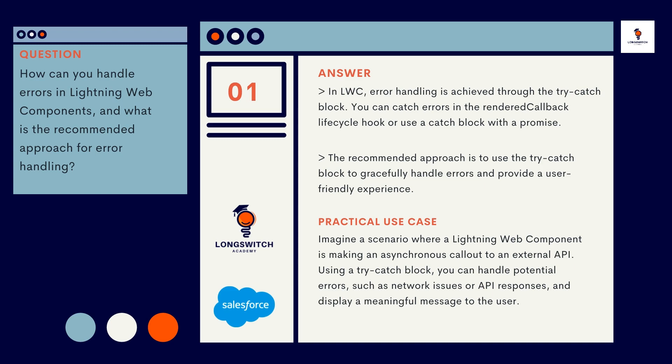In LWC, error handling is achieved through the try-catch block. You can catch errors in the rendered callback lifecycle hook or use a catch block with a promise. The recommended approach is to use the try-catch block to gracefully handle errors and provide a user-friendly experience. For a practical use case, imagine a scenario where a Lightning Web Component is making an asynchronous call-out to an external API using a try-catch block. You can handle potential errors such as network issues or API responses and display a meaningful message to the user.